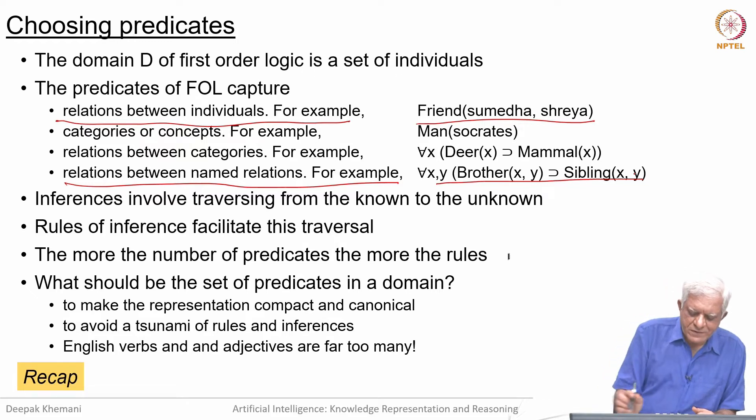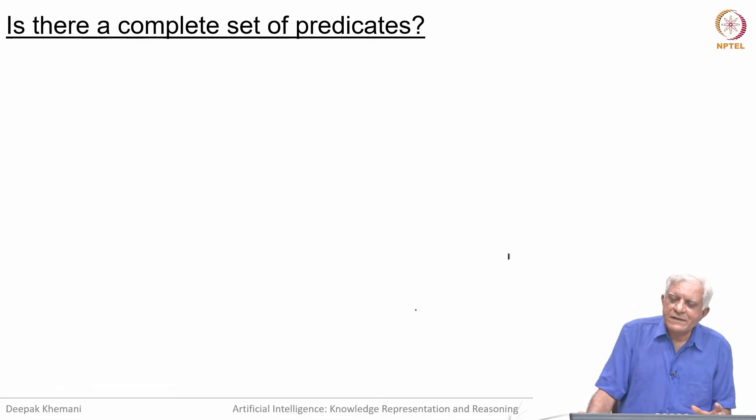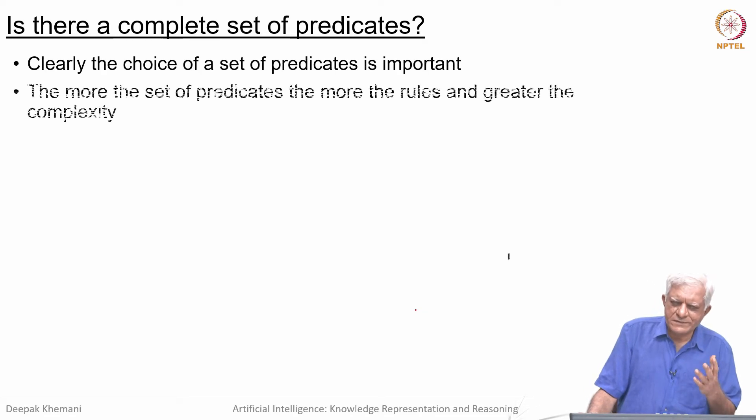Another question is: what should be the set of predicates in a domain to make the representation compact and canonical? Is there a complete set of predicates? Complete in the sense that using them, you can express whatever you want to say. We saw, for example, there is a complete set of logical connectives using which you can capture all other connectives. Likewise, is there a complete set of predicates? That is a difficult question to answer, but we shall keep that in mind.